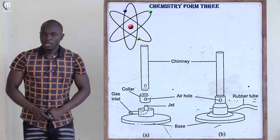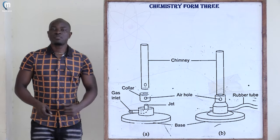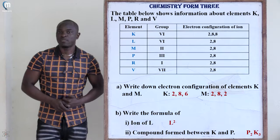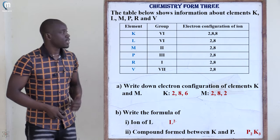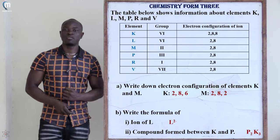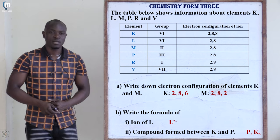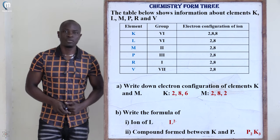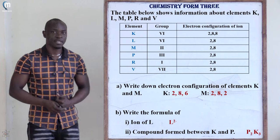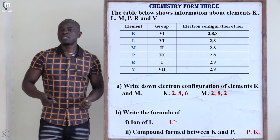Hello and welcome. Today we are looking at a Chemistry Paper 1 Form 3. Let's begin from the first question. The first question shows a table of the periodic table, and the question asks: the table below shows information about the elements from K to V.